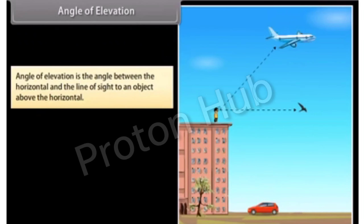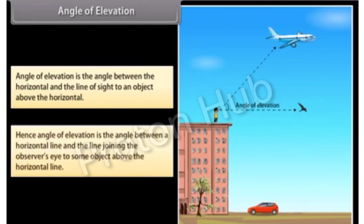The angle formed between the two lines is called the angle of elevation. Hence, angle of elevation is the angle between a horizontal line and the line joining the observer's eye to some object above the horizontal line.